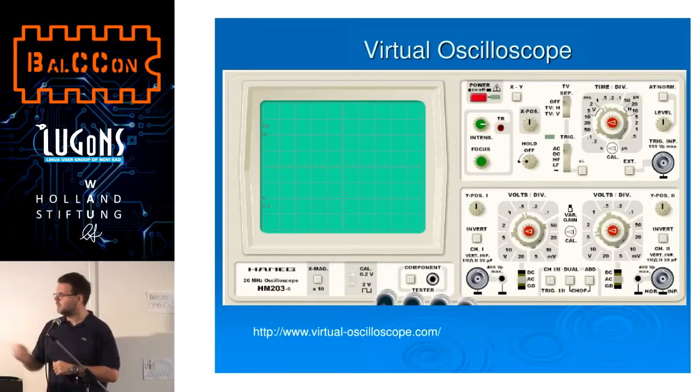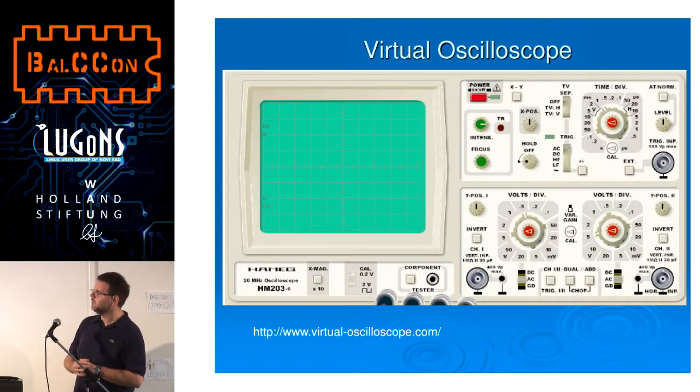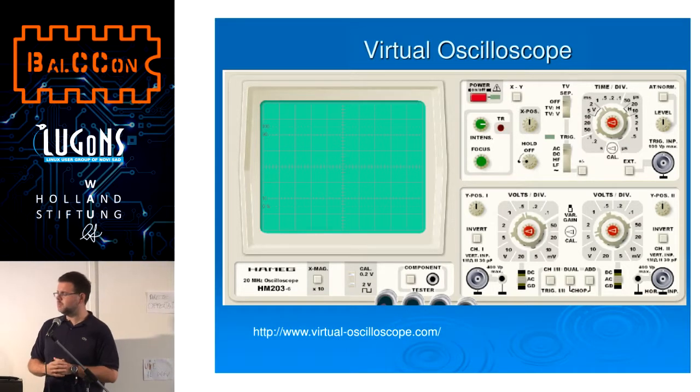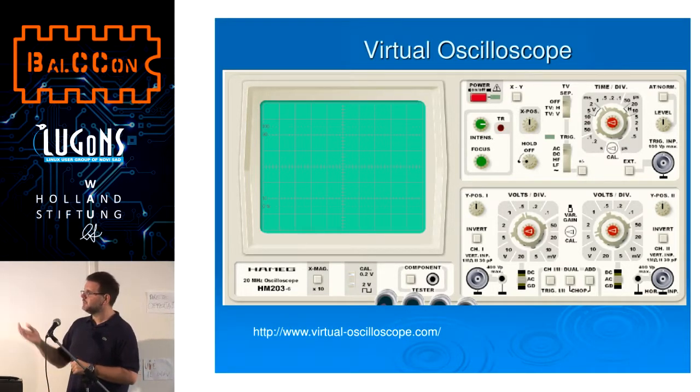We'll take a look at an analog scope, and most of the functions are the same for analog and digital. We can take a look at a virtual oscilloscope — you can find it at that address, it's free. It's a plug-in for your browser and represents a very real analog oscilloscope with regular controls. I'll try to quickly cover some of the most basic controls to allow you to play with this thing.